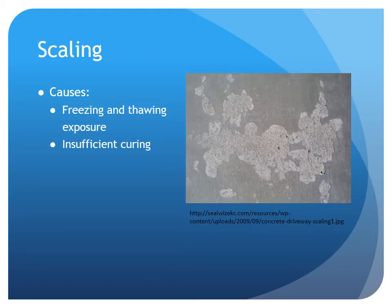Lastly, we'll talk about scaling. Scaling is the local flaking or peeling off of a finished surface of hardened concrete as a result of exposure to freezing and thawing. If bleed water is present on the surface, this gives the structure a low-strength surface layer due to high water-cement ratio. This layer will be susceptible to scaling in freezing conditions. Insufficient curing could also cause scaling, since it will also result in a weak surface.